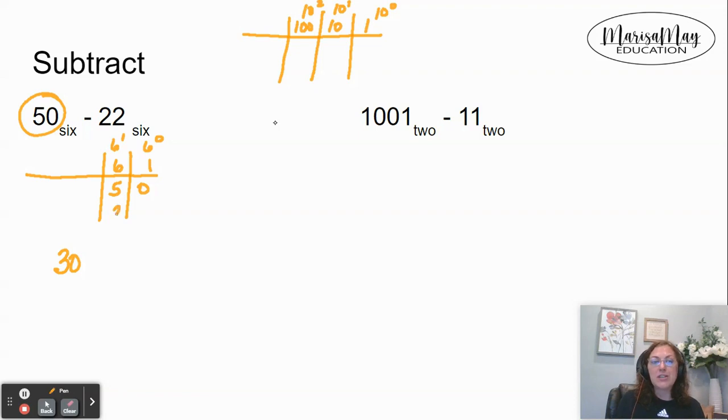Look at it for 22 in base six. That means you have two groups of six, which is 12, plus two ones, which is 14.